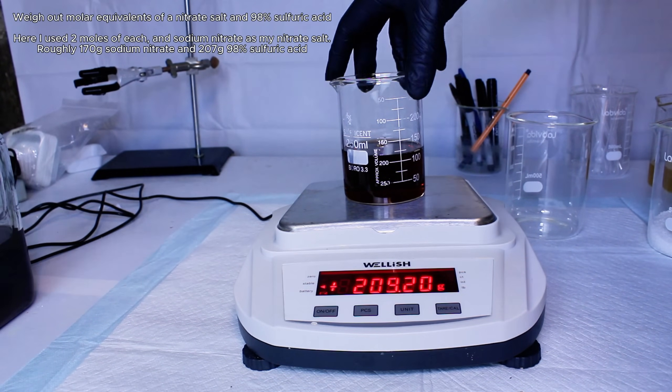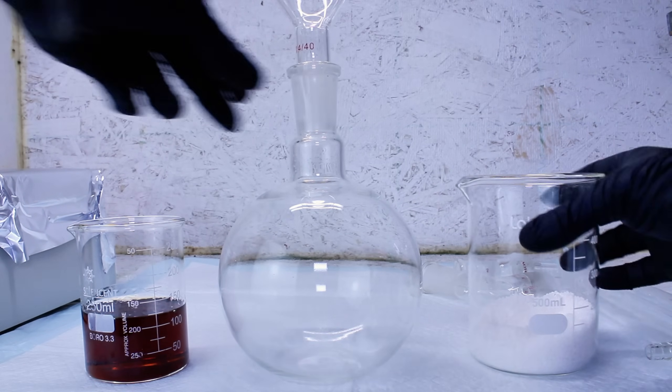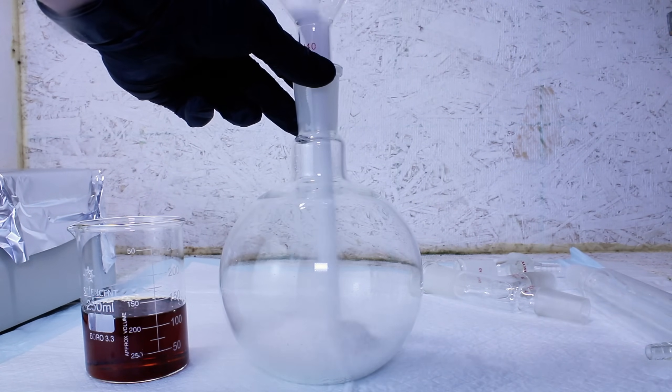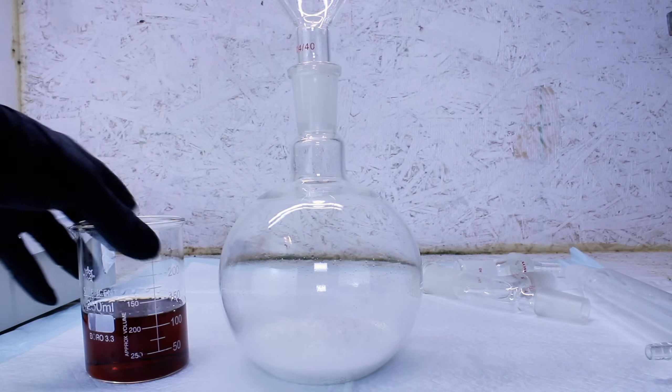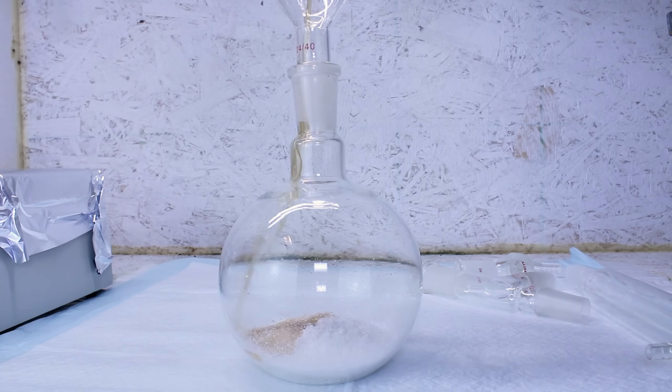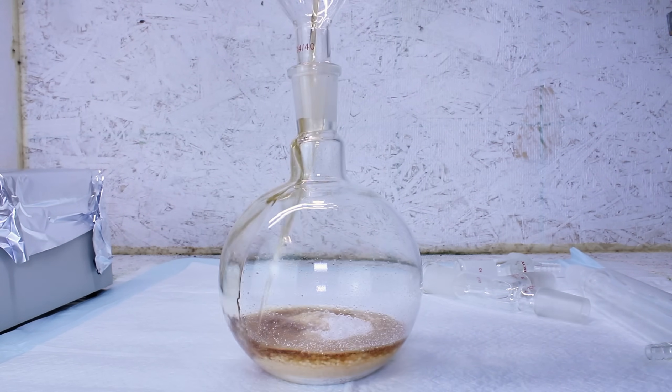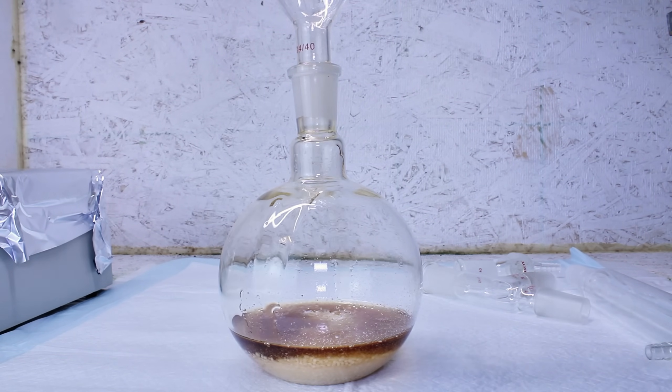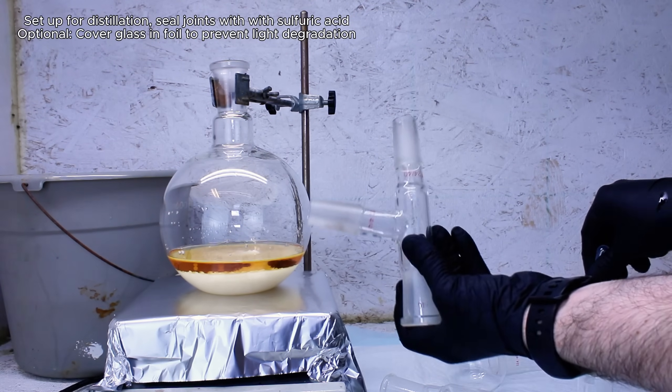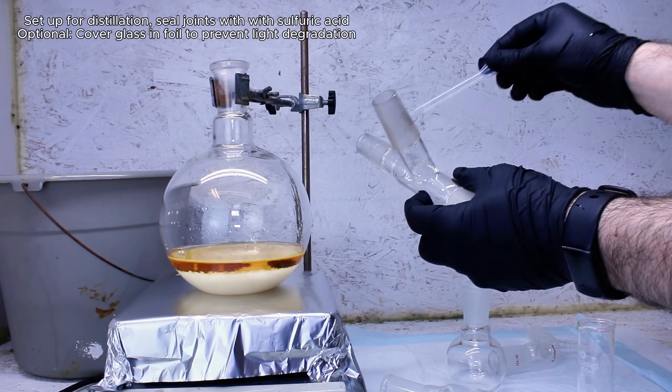As you can see here, my sulfuric acid is highly discolored, and this is because I really only use impure waste sulfuric acid from other projects to make nitric acid. These two chemicals are then added to a boiling flask and set up for a basic distillation while making sure to seal every joint of my distillation apparatus with sulfuric acid.